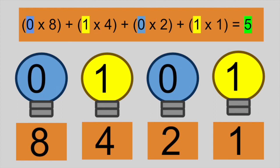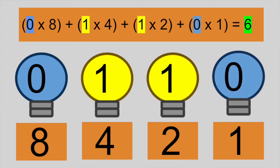To represent the value 6, we add 1 times 4 plus 1 times 2 plus 0 times 1, so we have 4 plus 2.